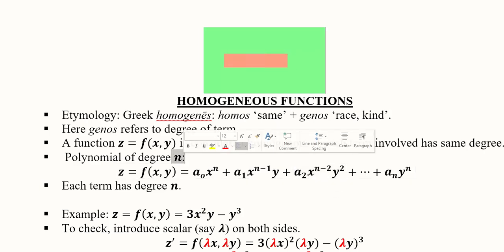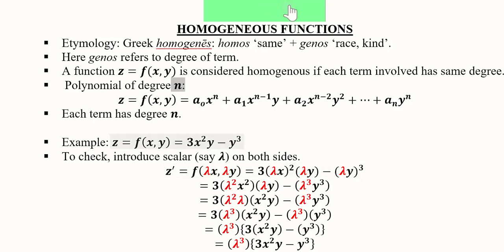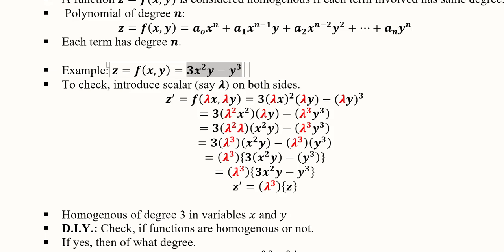Now we check this mathematically. This is the function we are going to use to verify if it is a homogeneous function or not. The example is z = f(x, y) = 3x²y - y³. What we do is introduce a scalar, for example lambda, on both sides. This is the procedure of it.